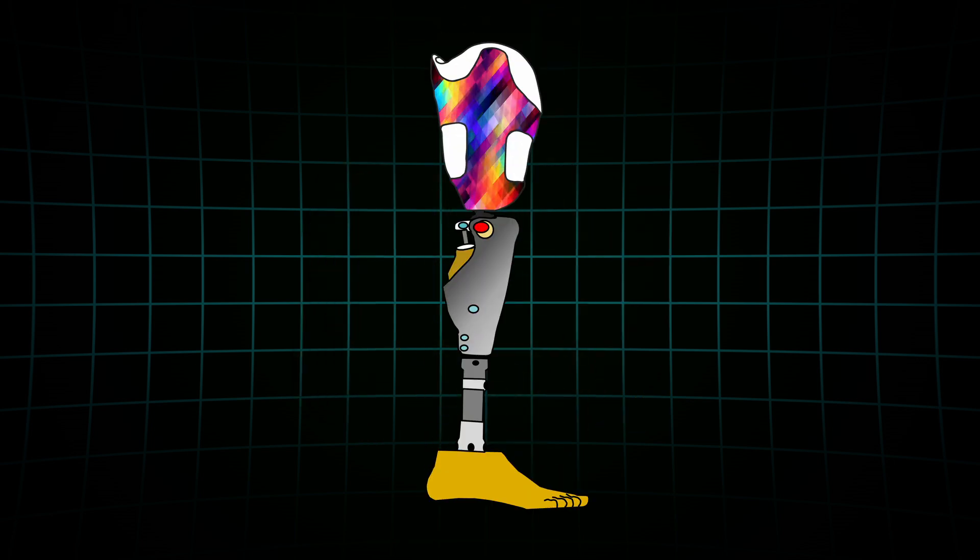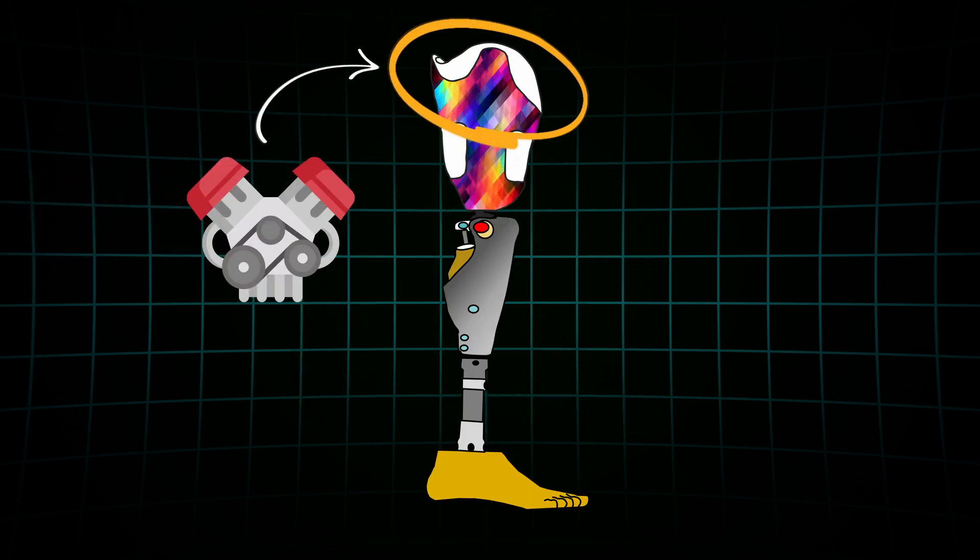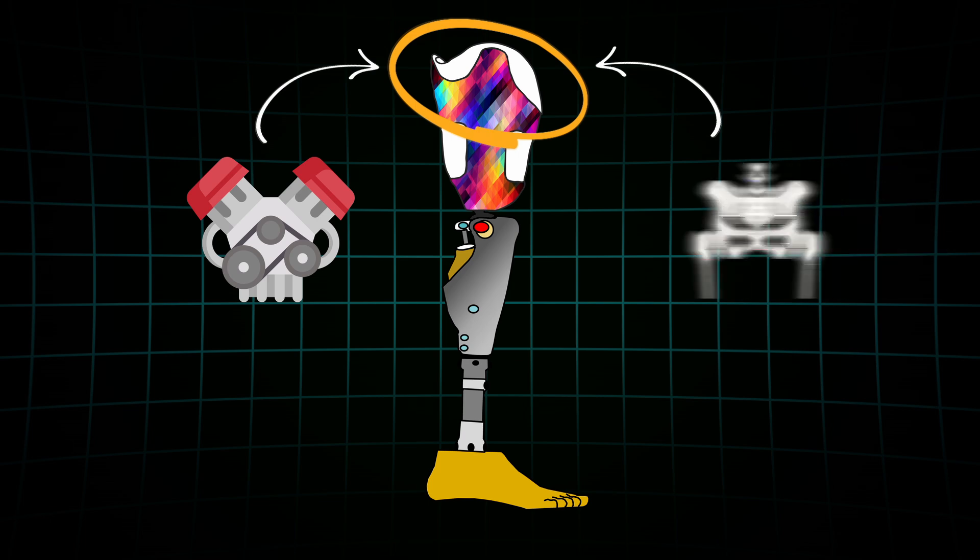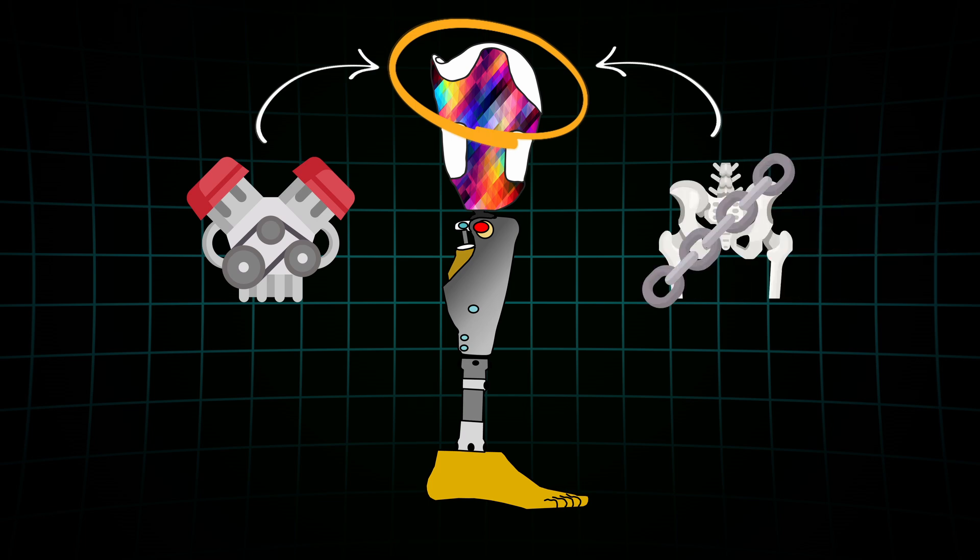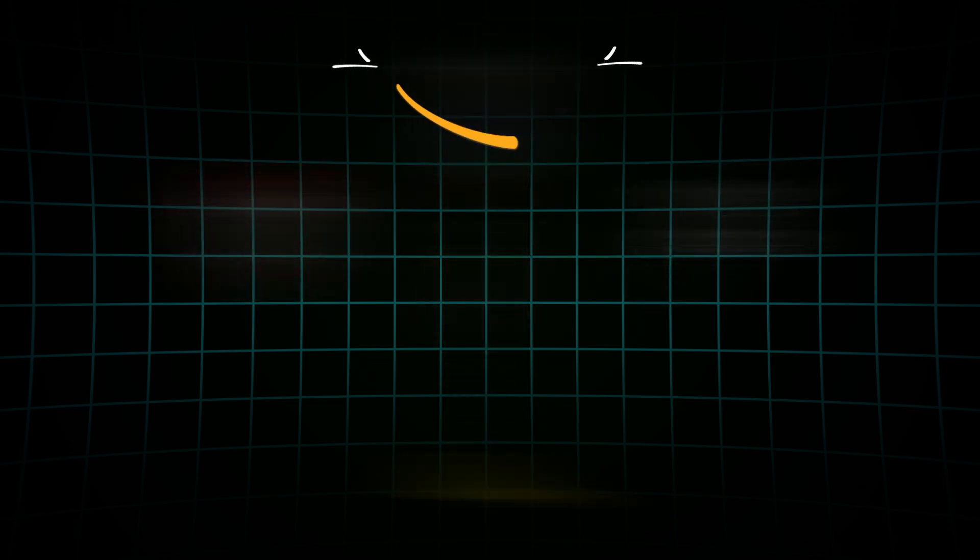For trans-femoral amputees, the hip becomes the powerhouse of walking. But here's the problem: some sockets restrict hip mobility, and that's a big issue. If the hip can't extend freely, the user can't generate the forward momentum they need. And there's more.